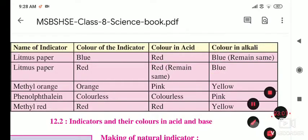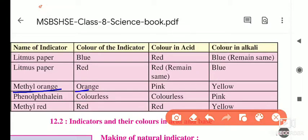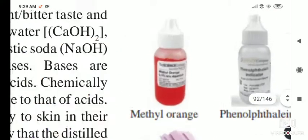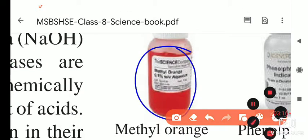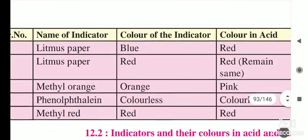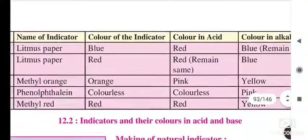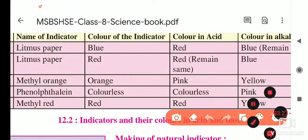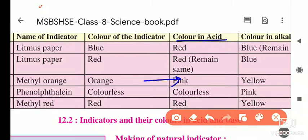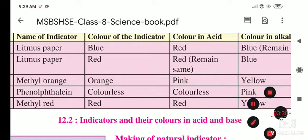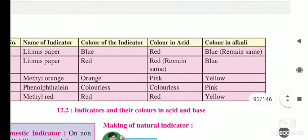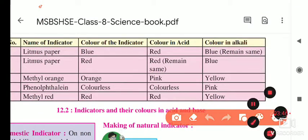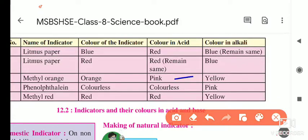The third indicator is methyl orange. Its color is orange normally — you can see it looks orange in the bottle. When we add methyl orange into acids, it turns pink in color. When adding it to bases or alkalis, the color of the solution changes to yellow. So if we add methyl orange to a substance and it turns pink, it is acidic in nature; if it turns yellow, it is basic or alkaline in nature.